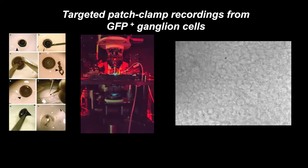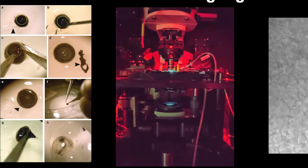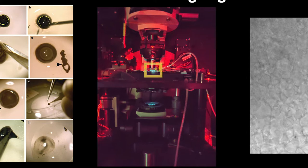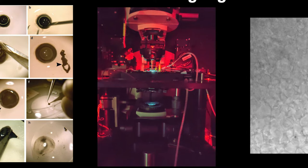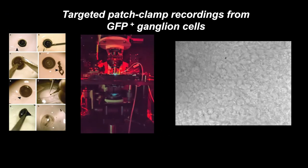Let me take you through how we do experiments in the lab. We extract eyes from mice and microdissect out the retina, then lay it flat on a coverslip placed under the two-photon microscope. Using an infrared camera, you can see the flat-mount retina — each circle is a ganglion cell, with very fine axons — and you can image or record from cells using either electrodes or the laser.